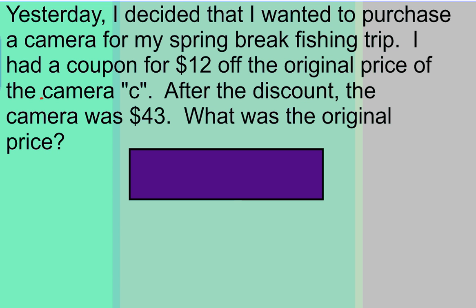The first thing I need to ask myself is what is the important information? So if I go back through the problem, I have $12 off, and that's off of the original price of the camera C. So there's my variable. After the discount, discount is also something that would suggest I'm getting a smaller amount. The camera was $43. What was the original price?